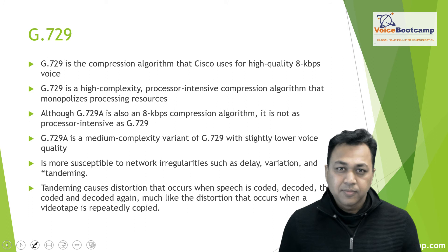G.729, called the internet codec, was mostly used on the internet. This codec is used to get the best quality within the maximum bandwidth available. It is a high-complexity, processor-intensive codec with a very advanced algorithm. It takes a 64 kilobits packet and converts it into 8 kilobits, applying significant compression techniques. However, it does save a lot of bandwidth — instead of sending 64 kilobits per second, you're only sending 8K, which means you have room to send more calls.